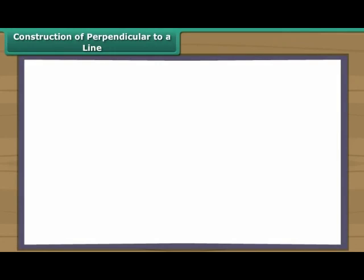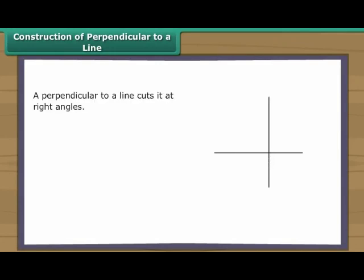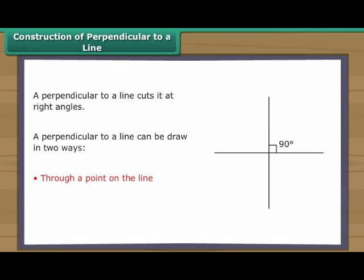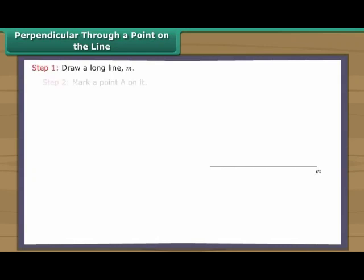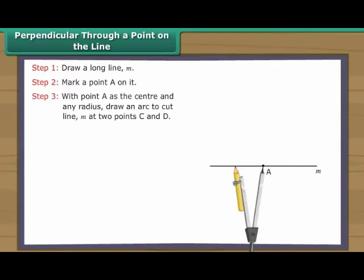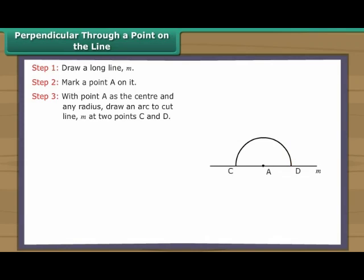Construction of Perpendicular to a Line. A perpendicular to a line cuts it at right angles. A perpendicular to a line can be drawn in two ways: through a point on the line, or through a point outside the line. Let us learn to construct perpendiculars in both ways. Perpendicular through a point on the line. Draw a long line M and mark a point A on it. With point A as the centre and any radius, draw an arc to cut line M at two points C and D.